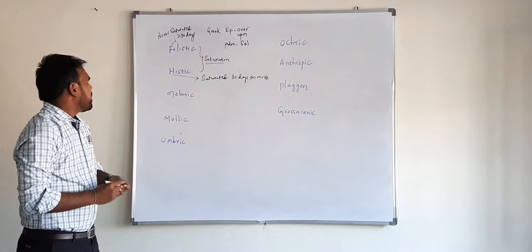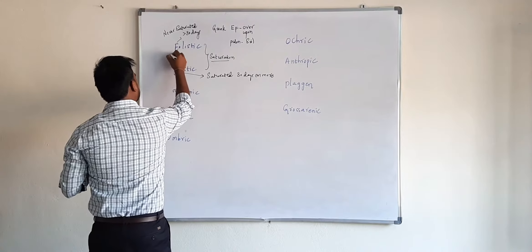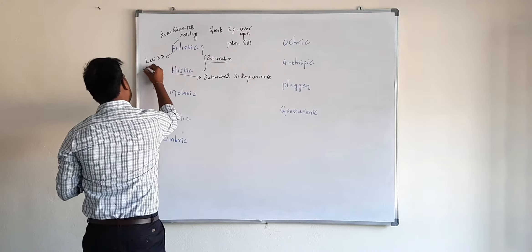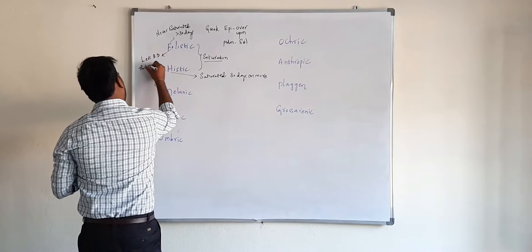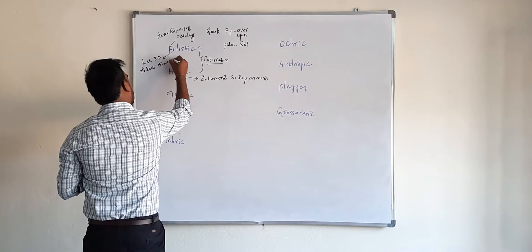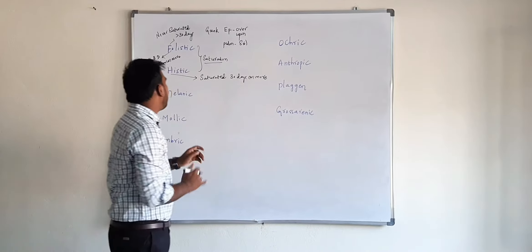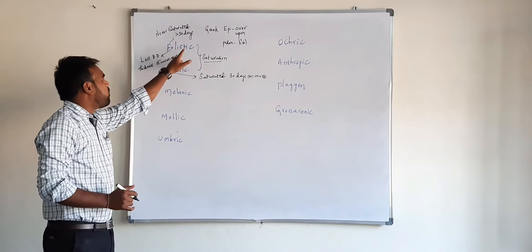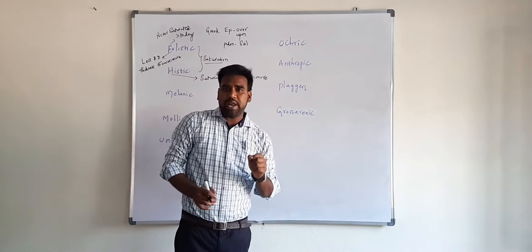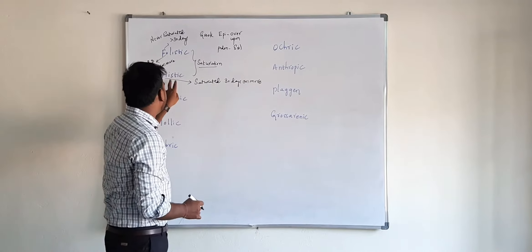Other features of foistic epipedan: it has very less bulk density. And if you see the thickness of foistic epipedan, it is 15 centimeters or more. Remember, mostly all foistic epipedans have organic soil material and remain saturated for less than 30 days.